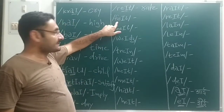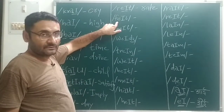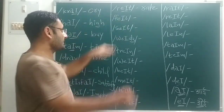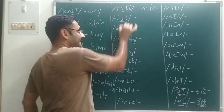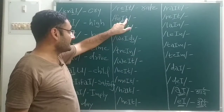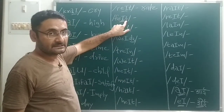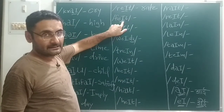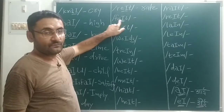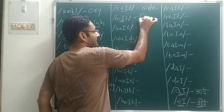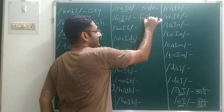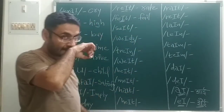We will move with the next: F sound, A sound, L sound — F, A, L — that is 'fail'. So I will write: fail.